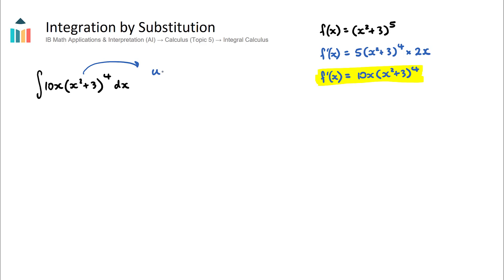The first step is to let that original term equal u. So we say u = x² + 3. After that, we take the derivative of u: du/dx = 2x. Then — an optional but helpful step — we rearrange to get dx as the subject. Multiply dx up and move what's on the right to the denominator on the left: dx = du / 2x.